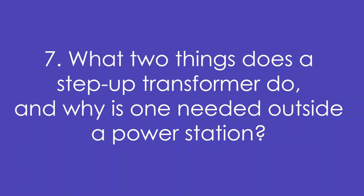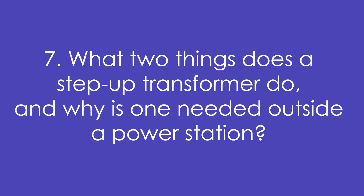Question 7: What two things does a step-up transformer do and why is one needed outside a power station? It increases the voltage but decreases the current. We need the current reduced before going to the national grid, otherwise too much energy is lost as heat due to the resistance of the overhead cables.